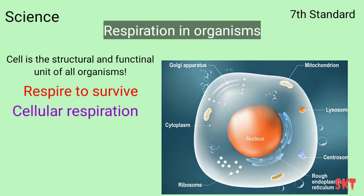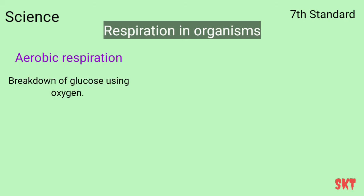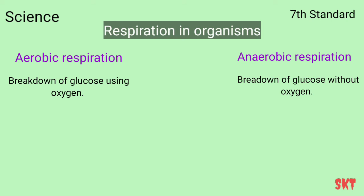The breakdown of food using oxygen is called aerobic respiration — in other words, when the breakdown of glucose occurs with the use of oxygen, it is called aerobic respiration. Food can also be broken down without using oxygen; this is called anaerobic respiration. So there are two types of respiration: aerobic respiration, which is breakdown of food using oxygen, and anaerobic respiration, which is breakdown of food without using oxygen.